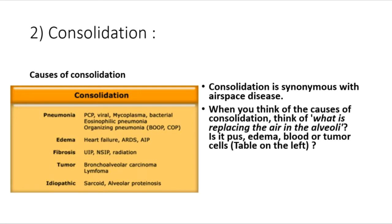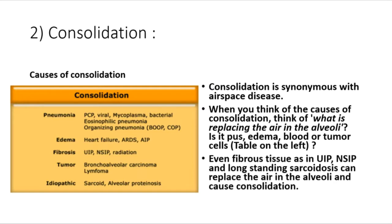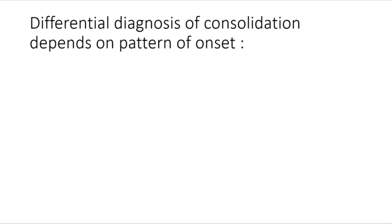Consolidation is synonymous with airspace disease. When considering the causes of consolidation, think of what is replacing the air in the alveoli: pus, edema, blood, tumor cells, or even fibrous tissue as in UIP, NSIP, and long-standing sarcoidosis — all can replace alveolar air and cause consolidation.